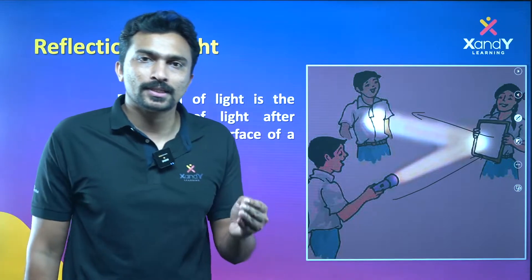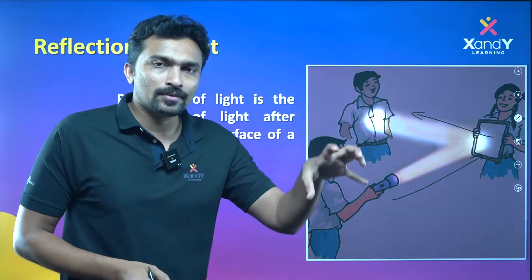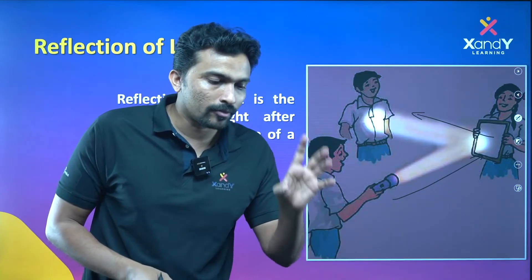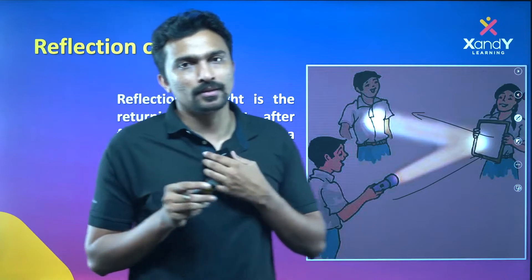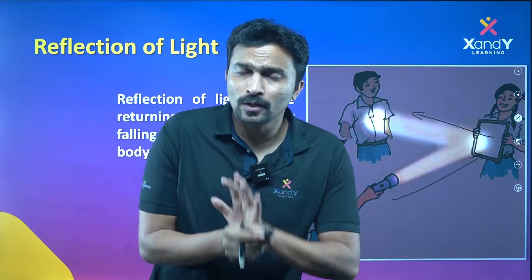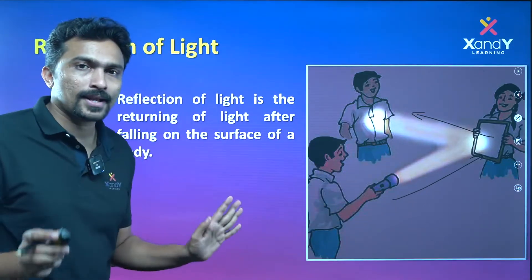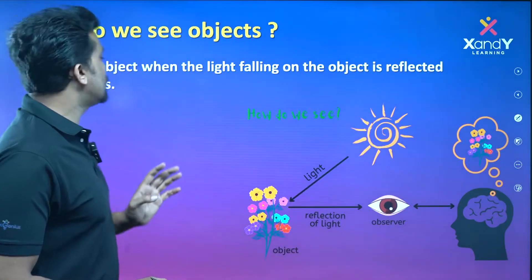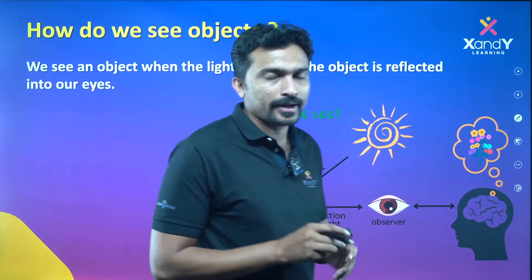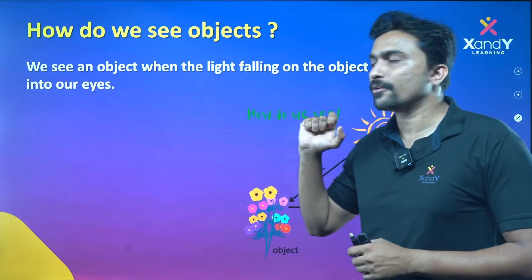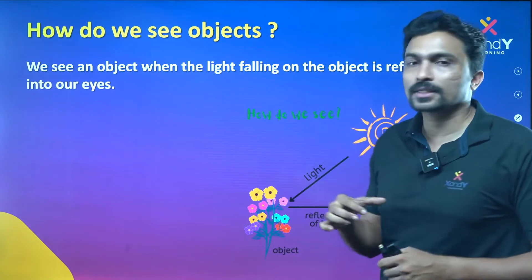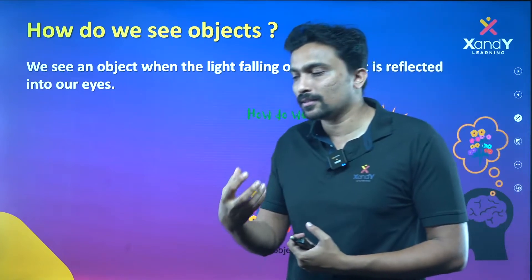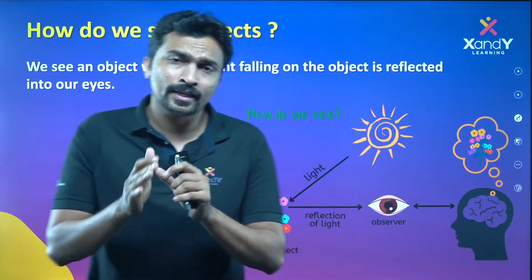First of all, what can we do with all objects? Light comes from an object, and when it reaches our eyes, we can see that object. That is what we observe in the dark room — this phenomenon is called reflection of light. We see an object when the light falling on it is reflected into our eyes.